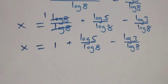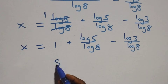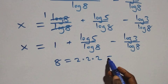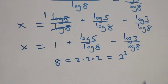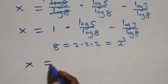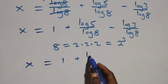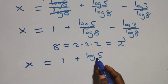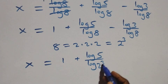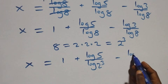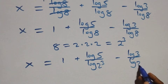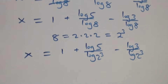Next step: we rewrite 8 as 2 raised to power 3. So x equals 1 plus log(5)/log(2^3) minus log(3)/log(2^3). Applying the power law of logarithm, this becomes x equals 1 plus log(5)/(3·log(2)) minus log(3)/(3·log(2)).